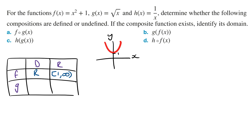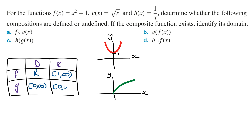g of x is a square root function. Sketching g of x, the domain of g is going to be from 0 to infinity, and the range is also going to be from 0 to infinity. Writing this in the table, the domain of g is from 0 to infinity, and the range of g is also from 0 to infinity.